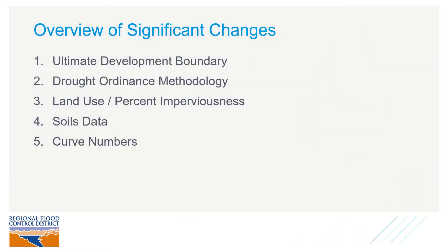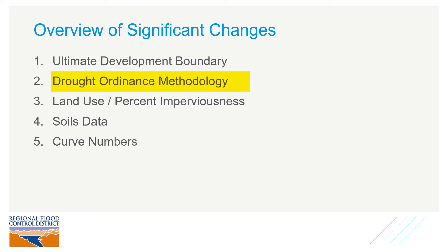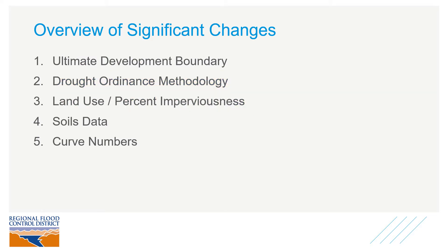I want to talk about five of the more significant changes that were made to the hydrology. First, ultimate development boundary. Second, drought ordinance methodology. Third, land use and percent imperviousness. Fourth, soils data. And fifth, curve numbers.